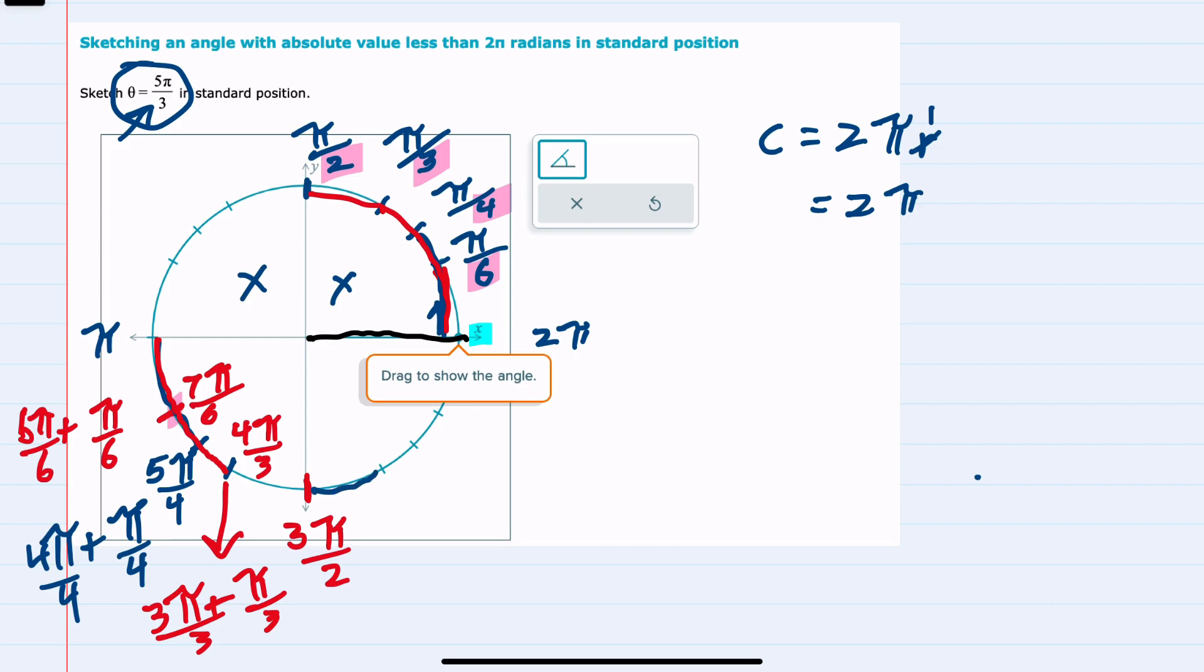I'm going to label this next tick mark here. Now I can start adding to this 3π halves. So 3π halves plus, remember our first size here is this π sixths, so I'm adding π sixths to this. Getting a common denominator would be 9π sixths plus π sixths or 10π sixths, which reduces to 5π over 3.